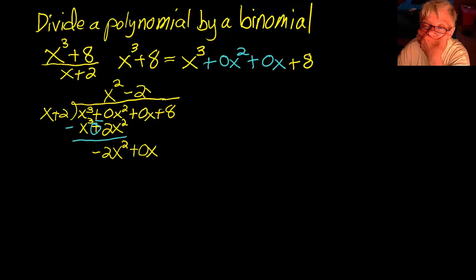x times negative 2x is negative 2x squared, and negative 2x times 2 is negative 4x. Draw the line. Change the signs.